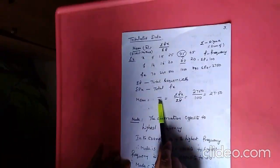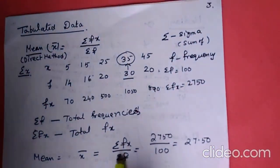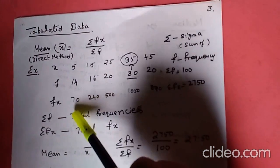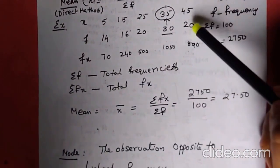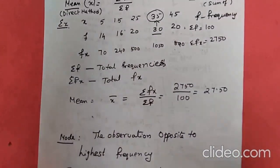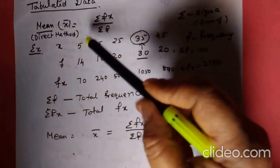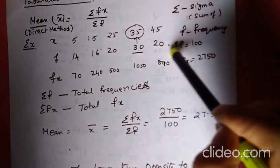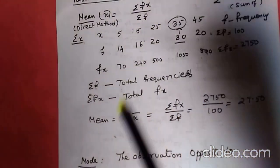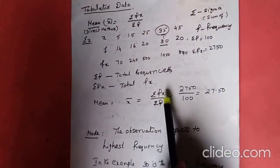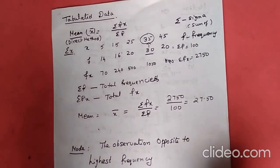The mean formula for tabulated data is x-bar = sigma fx divided by sigma f. First, find fx: 14×5=70, 16×15=240, 25×20=500, 35×30=1050, 45×20=890. Adding all frequencies gives sigma f = 100. Adding all fx gives sigma fx = 2750. Therefore mean = 2750/100 = 27.5. This is called the direct method.